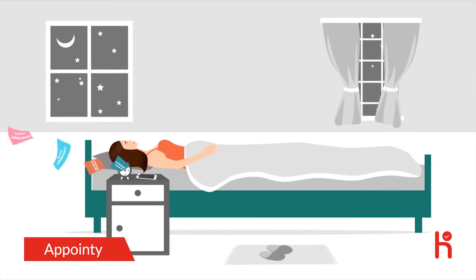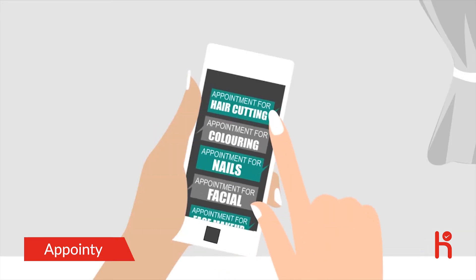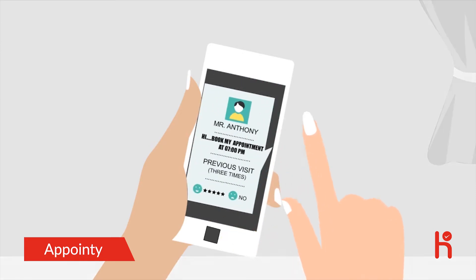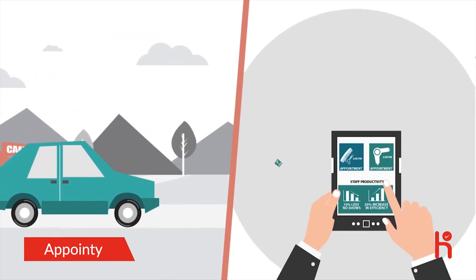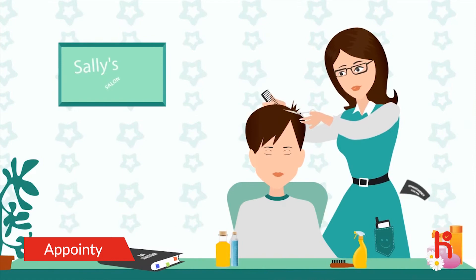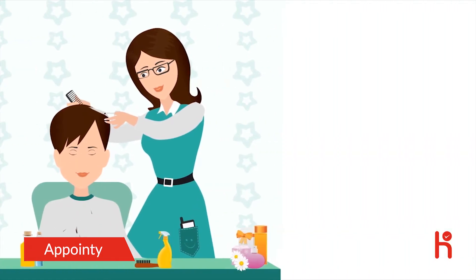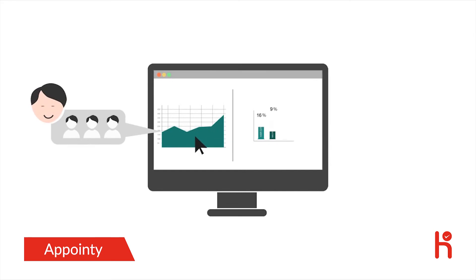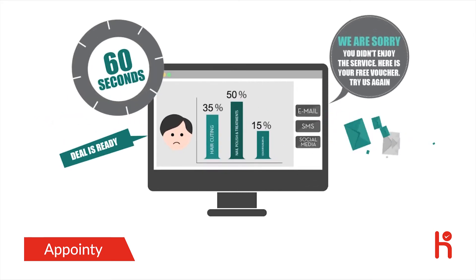At Appointee, we created a system that allows you to control time, which means you're open for business whenever your customers come looking. You can manage your business from wherever because all essential information is always in your hand. Appointee lets you send automated SMS reminders, which means you can minimize no-shows and increase performance and productivity. Appointee then collects feedback and generates powerful insights into buying preferences, frequency, and expectations — helping you design deals that show customers you care.